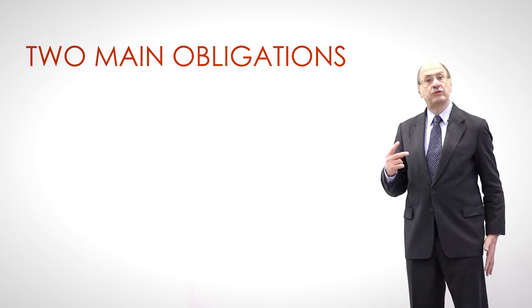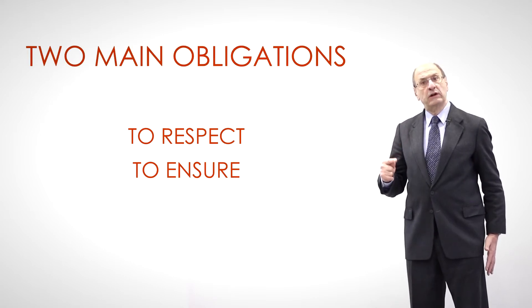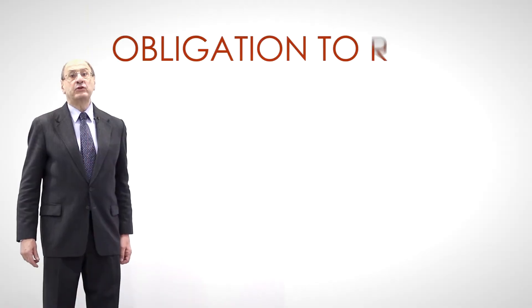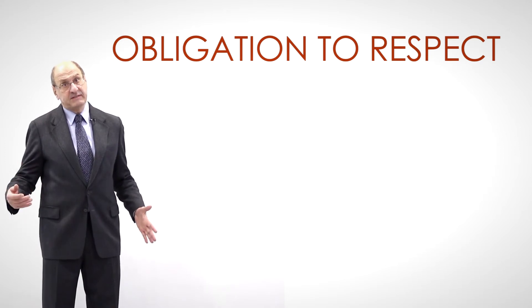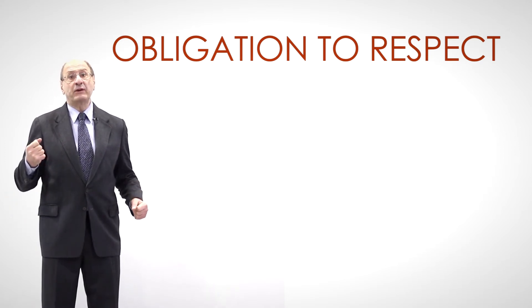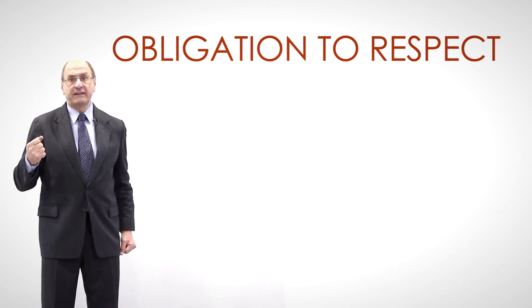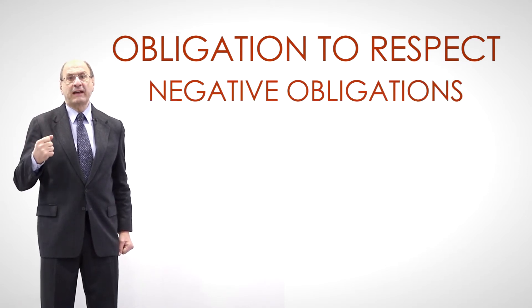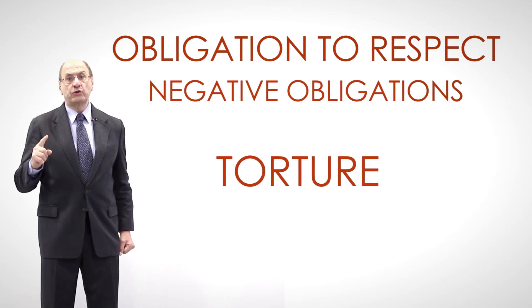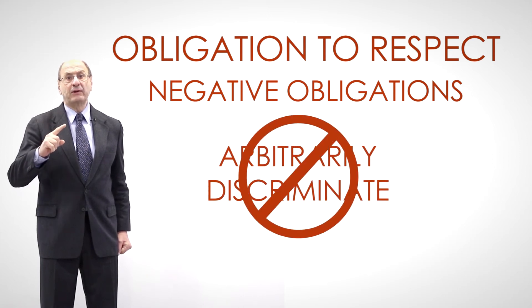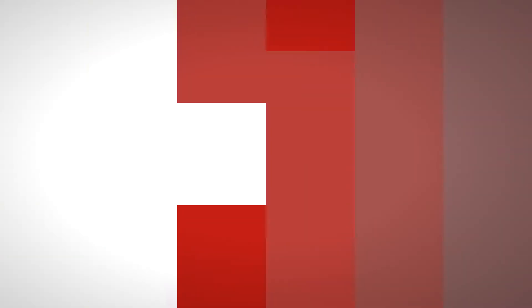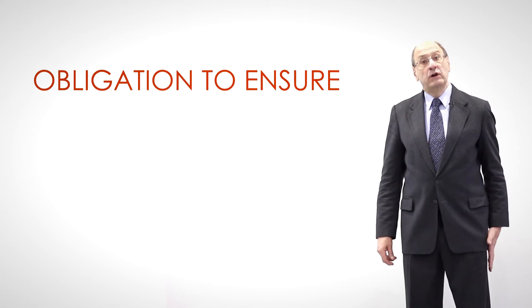International human rights treaties impose on states two main obligations: to respect and to ensure. The obligation to respect means that the state — in practice the state agents — must refrain from doing anything which affects the value being protected. These are negative obligations: not to kill, not to torture, not to arbitrarily imprison, not to censor, not to arbitrarily discriminate, etc.